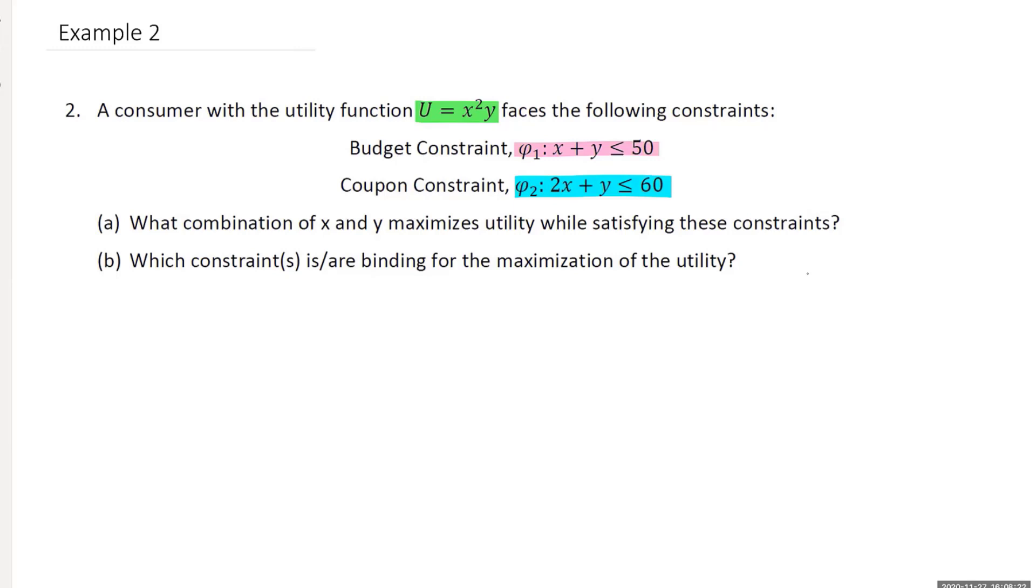What combination of x and y maximizes utility while satisfying these constraints? I'm going to set up my Lagrange. It's a function of x, y, lambda 1, and lambda 2. It's going to be the utility that I want to optimize, x squared y plus lambda 1 times constraint 1's budget is 50 minus x minus y plus constraint 2, its budget is 60 minus 2x minus y.